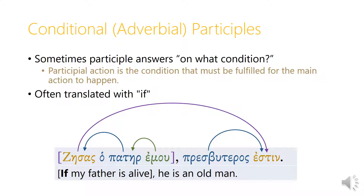Sometimes an adverbial participle can be conditional — the participle answers the question 'on what condition?' The participial action is the condition that must be fulfilled for the main action to happen, and we translate using the helper word 'if.' For example, the participial clause uses zaō ('I live'), and the main verb is third person singular. We have an explicit subject, ho patēr mou — 'my father lives.' The main clause is presbuteros estin — 'he is an old man.' The conditional relationship would be: 'if my father lives, he is an old man.'